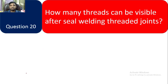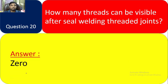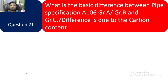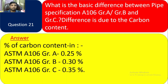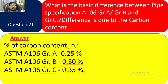Question 21: What is the basic difference between pipe specification A106 grade A, grade B, and grade C? The difference is due to carbon content. The carbon percentage in ASTM A106 grade A is 0.25%, A106 grade B is 0.30%, and A106 grade C is 0.35%.